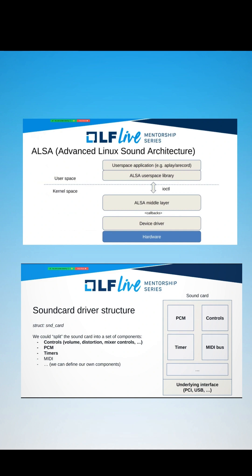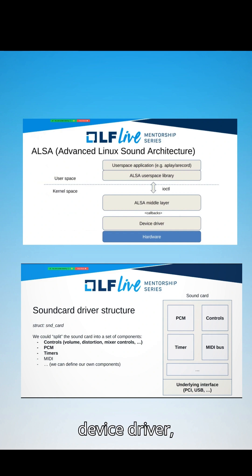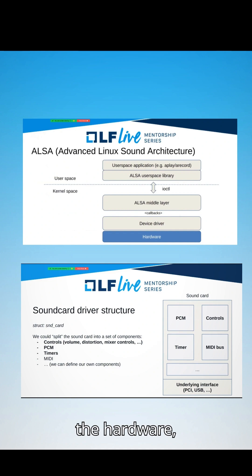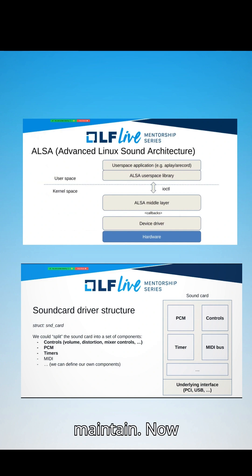Now inside the kernel space, we have three main components. The ALSA middle layer, which provides standard interfaces to different types of sound devices. The device driver, which is specific to your sound card model. And finally, the hardware, which is the actual sound card installed on your machine. This separation helps make the system modular and easier to maintain.